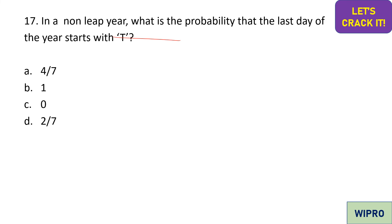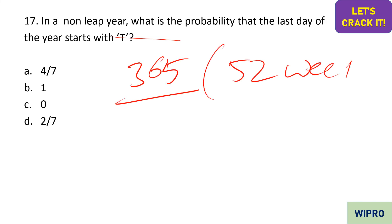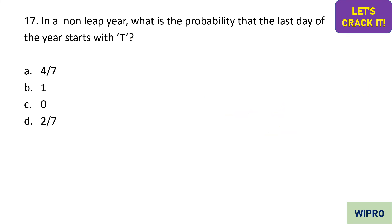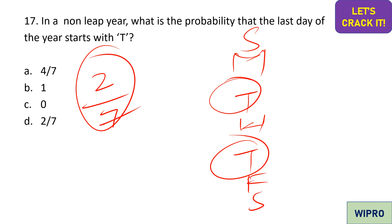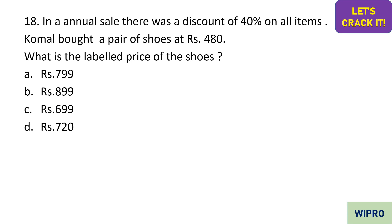A probability question: in a non-leap year, what is the probability that the last day of the year starts with 'T'? A non-leap year has 365 days = 52 weeks + 1 extra day. That extra day can be any of the seven days of the week. Days starting with 'T' are Tuesday and Thursday — that's 2 out of 7. So the answer is 2/7, option D.